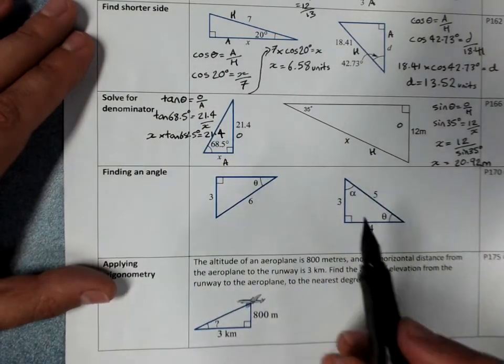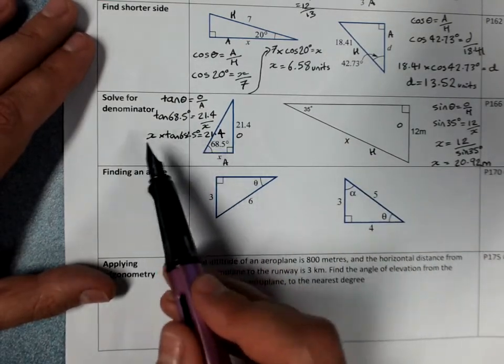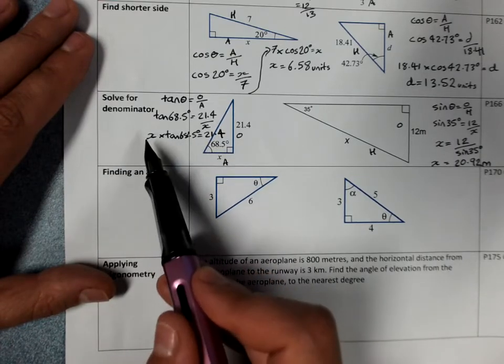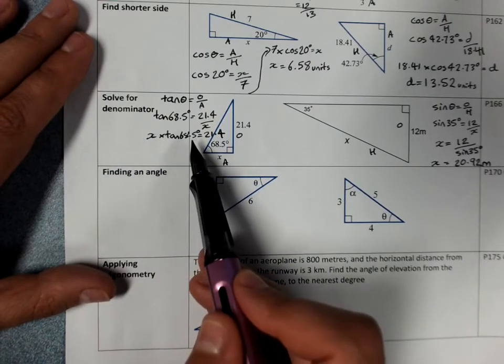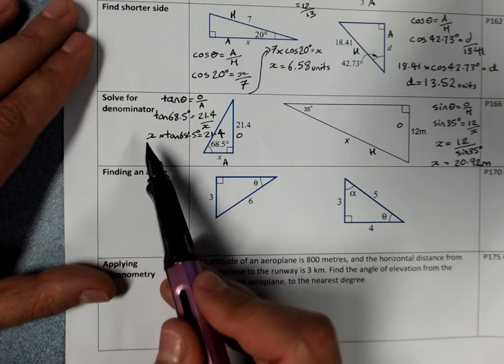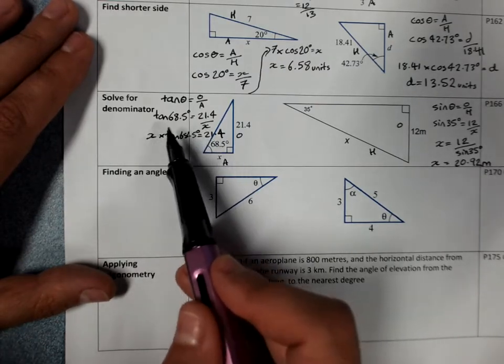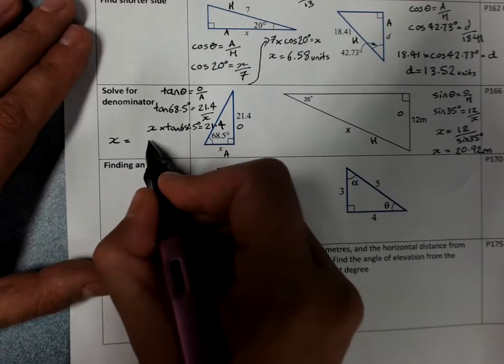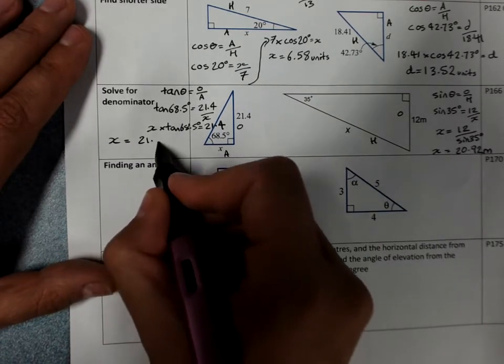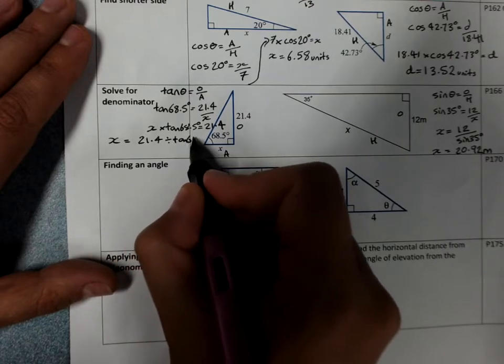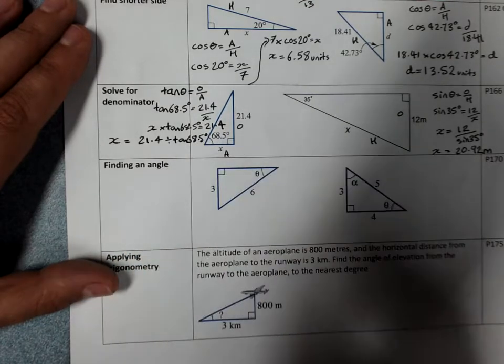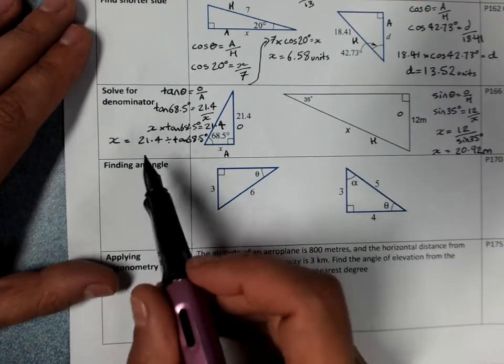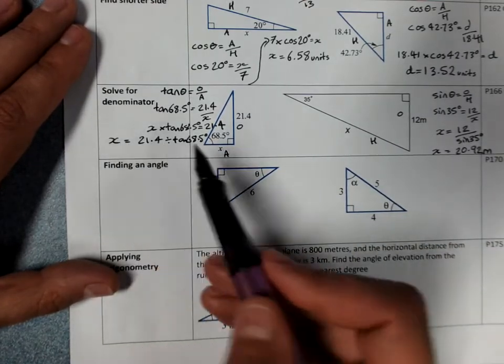Sorry about working over the question there. Now that hasn't got me x on its own, but it's got x up to the top line. I have x times tan 68.5 degrees. I just want x on its own. Which will mean dividing by tan 68.5 degrees. x equals 21.4 divided by tan 68.5 degrees. Or you could write it over it, of course. So that's mathematically why it turns out as a division.